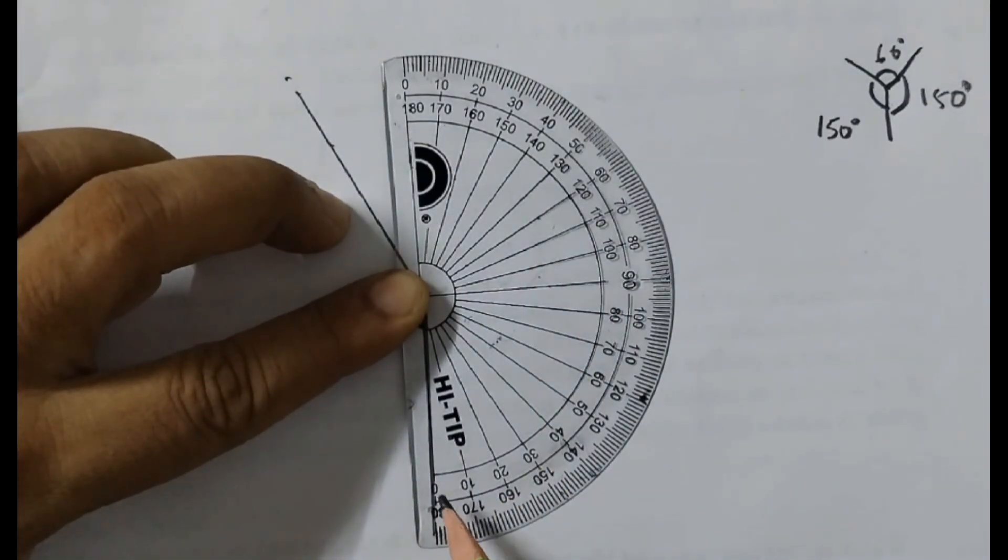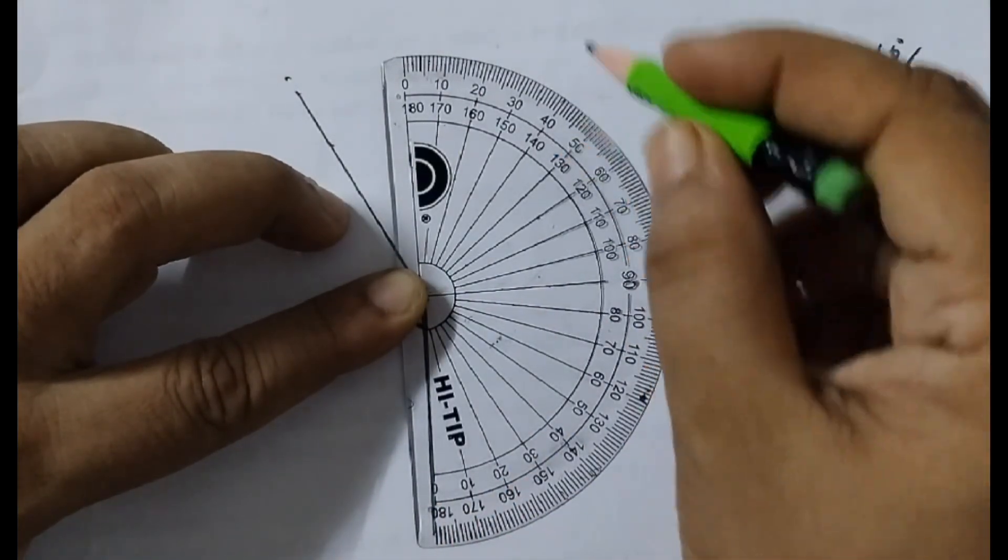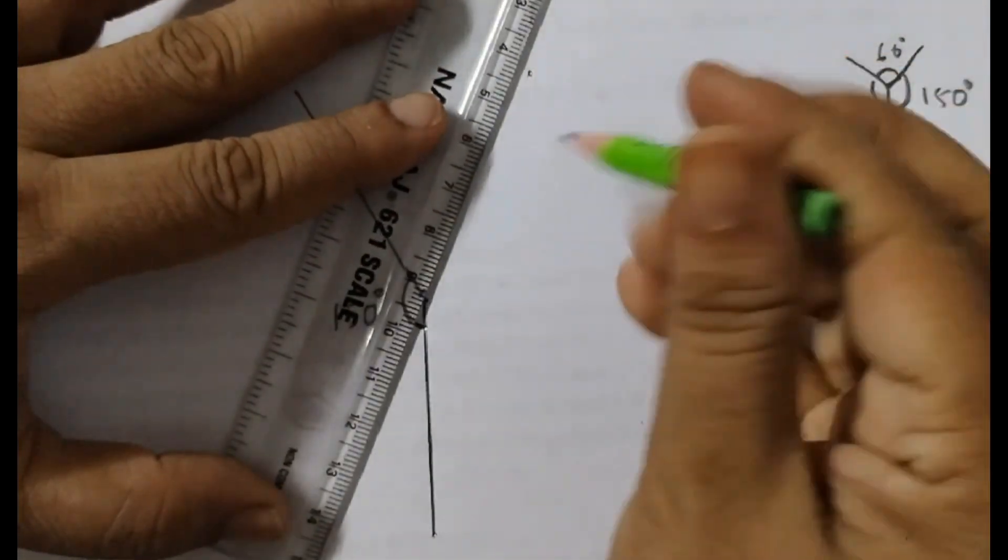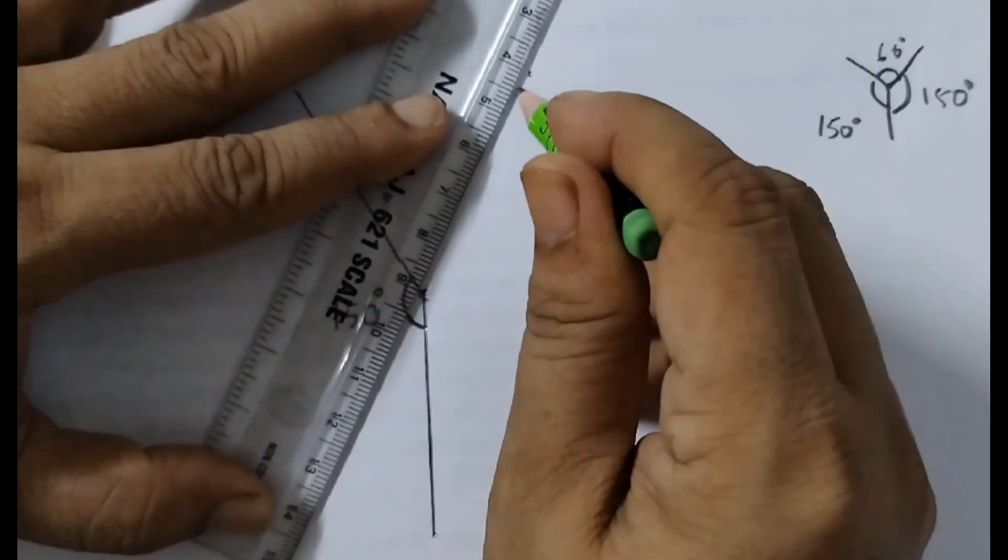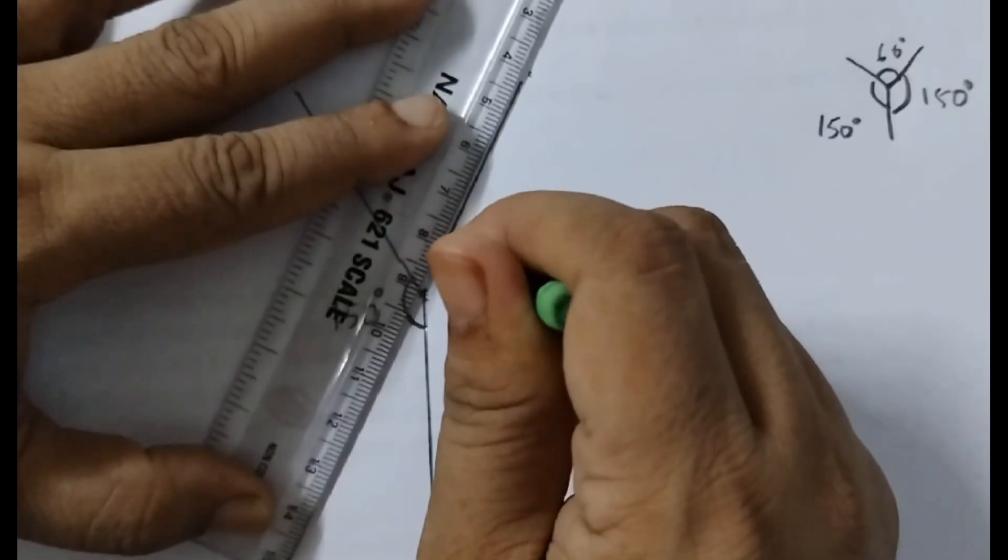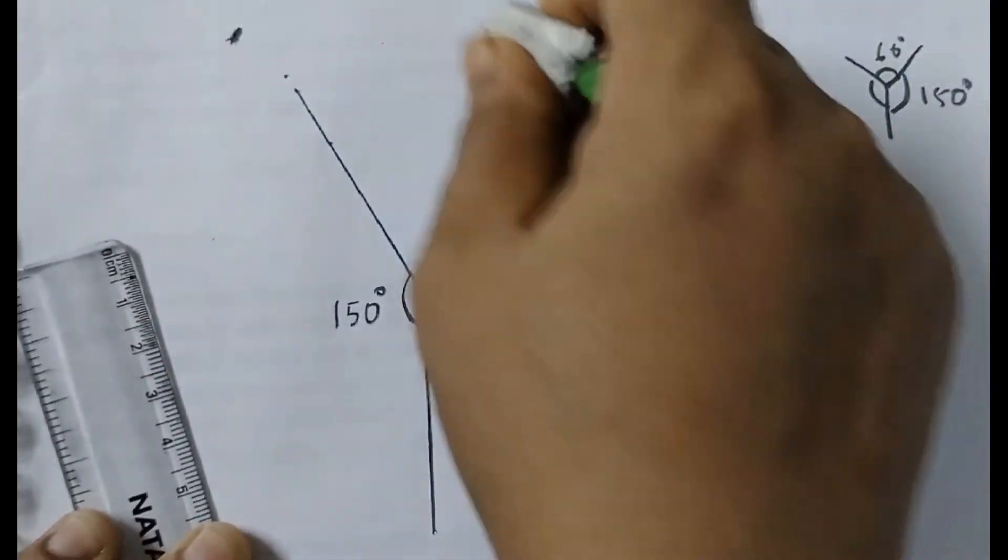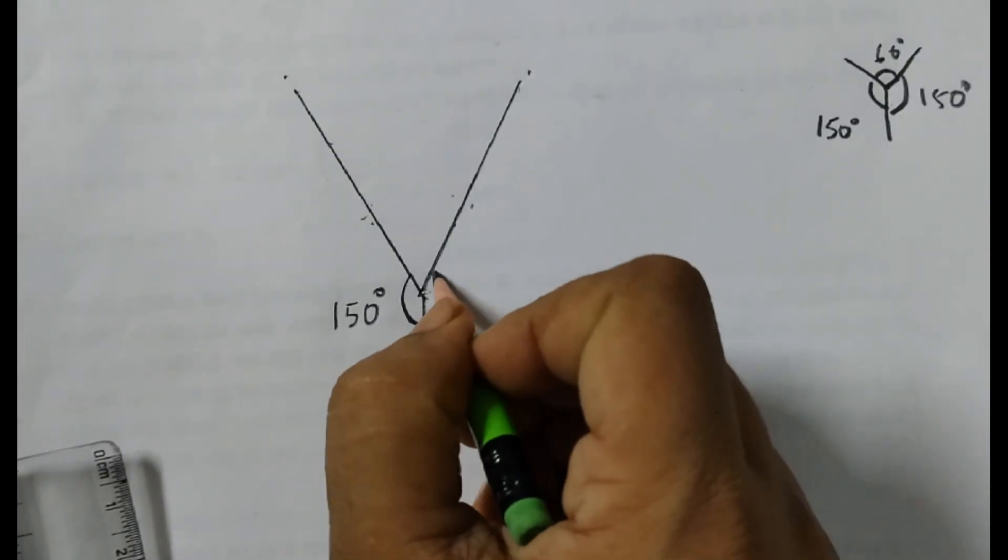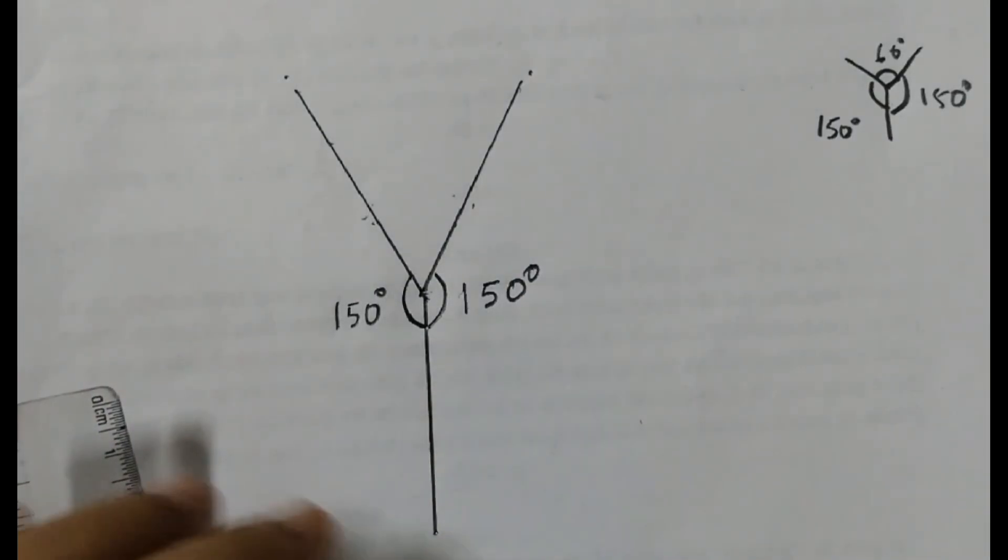So always we start from the 0. 0 starts from here so we will take the inner set of numbers and 150 would be 90, 130, 140, 150, here it is. Join these two points and draw a line here. Take these two lengths of equal measure. So now this is also 150 degrees. This is 150 degrees.